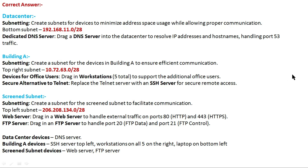For Building A subnetting, create a subnet for the devices in Building A to ensure efficient communications. The correct IP is 10.72.63.0/28. For office user devices, drag in five total workstations to support the additional office users. As a secure alternative to Telnet, replace the Telnet server with the SSH server for secure remote access.